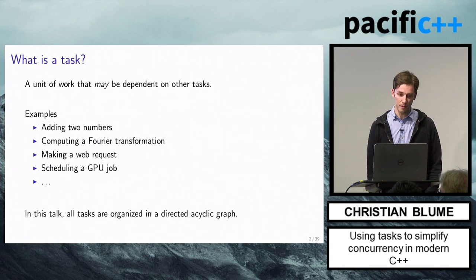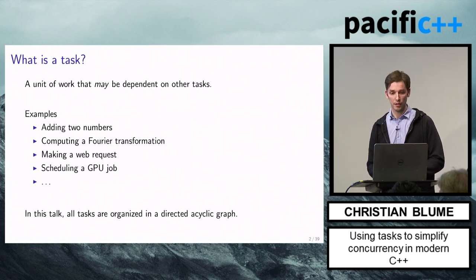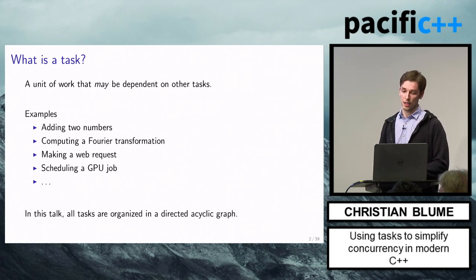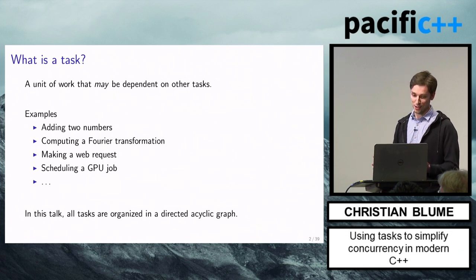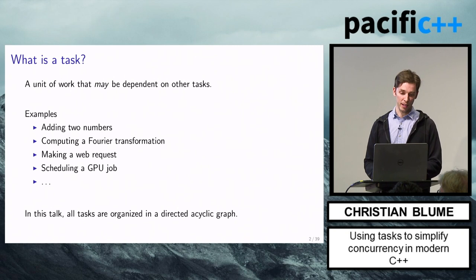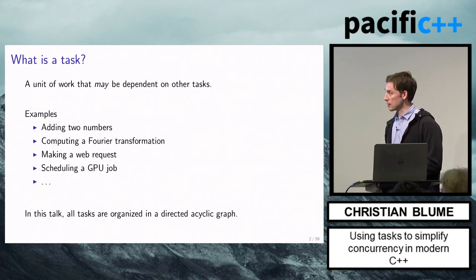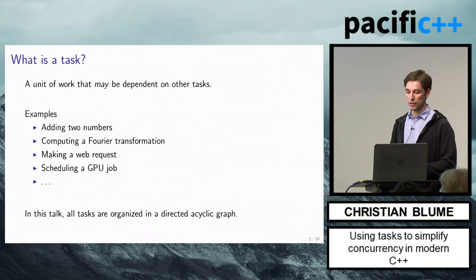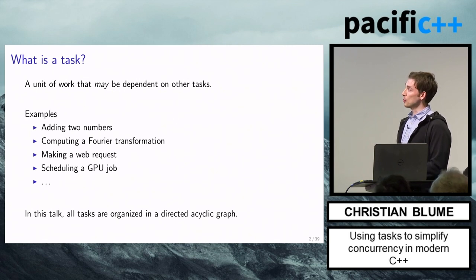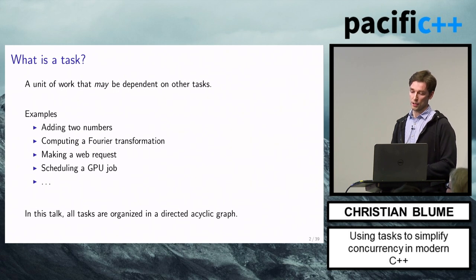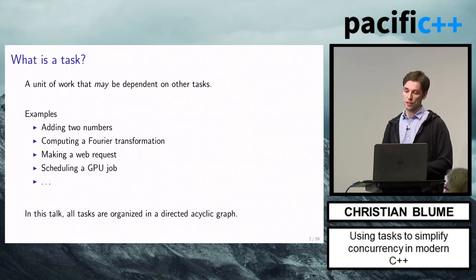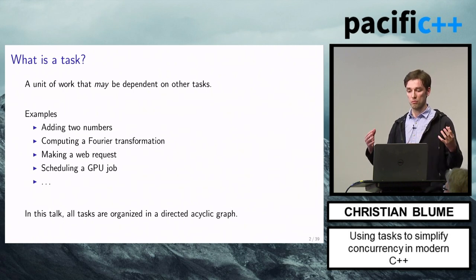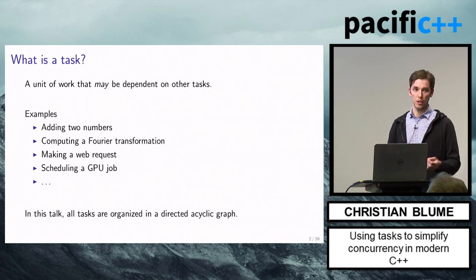So what is a task? In the most general sense, it's simply a unit of work that may or may not depend on other tasks. Examples include adding two numbers, doing some complicated analysis, or making web requests — it can be anything. In this talk, tasks are always organized in a directed graph, because graphs are awesome and have nice properties for concurrency. A task always wraps a functor and gives you access to some kind of handle, which lets you get the result of that computation at a later time.